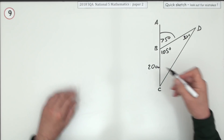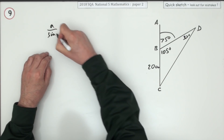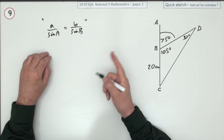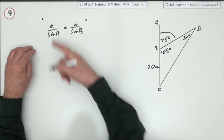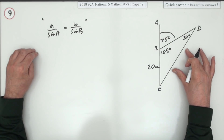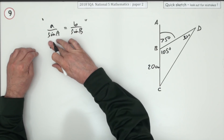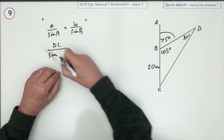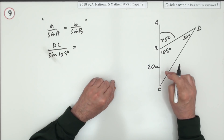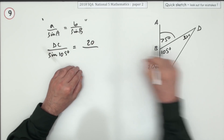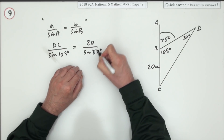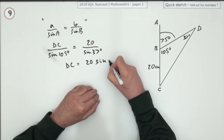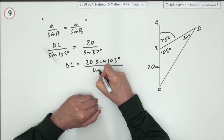You could just go straight in with it — a over sine A equals b over sine B, etc. I would just go in with it. They want to call it DC, so: DC over the sine of its angle, 105 degrees, is the same as the pair you know, which is 20 over the sine of its angle, 37 degrees. So DC is going to be 20 sine 105 over sine 37.